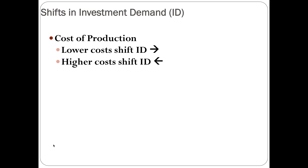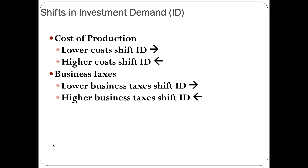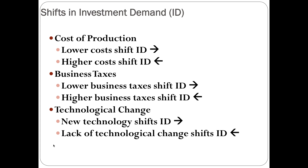Let's look at some of the factors that shift the investment demand curve — the determinants of investment demand. Cost of production is a big one: lower costs mean it's more profitable to invest, so investment demand shifts right; higher costs shift it left. Business taxes: lower business taxes create an environment where businesses want to invest, shifting the curve right; higher taxes shift it left. Technology change: new technology encourages investment and shifts demand right; lack of it shifts it left.